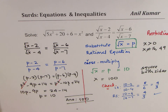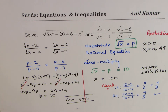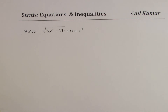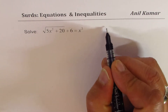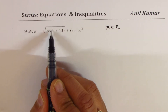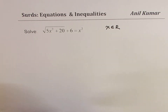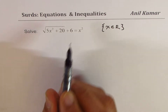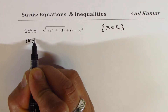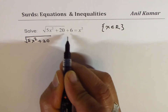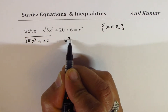In any equations or inequalities dealing with square roots, we should always check our solution. Now let's take up the first question, which is kind of tricky. In this case, the domain is all real numbers, since 5x² is always positive. To solve such equations, we rewrite it as √(5x² + 20) = x² − 6.